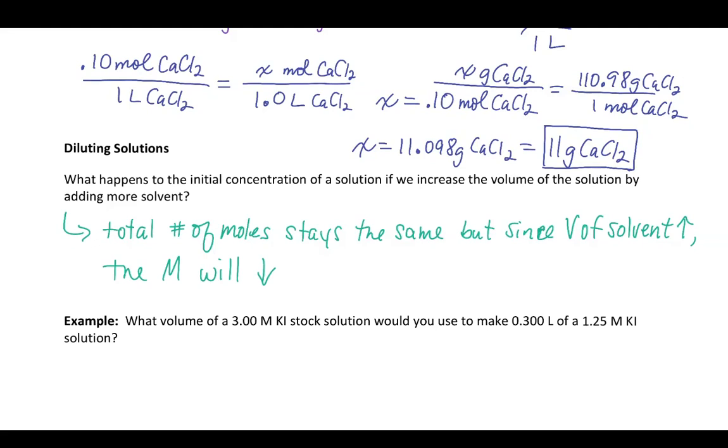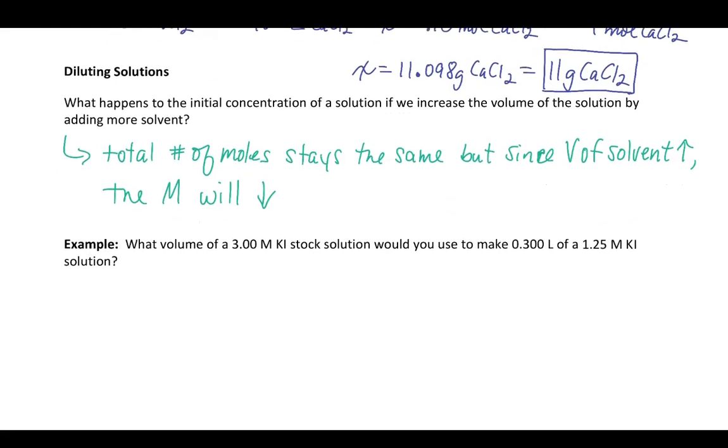But since volume of the solvent increases, the molarity will decrease. So we should, when we dilute, always wind up with a smaller molarity because we're going to wind up with a larger volume with the same amount of moles.